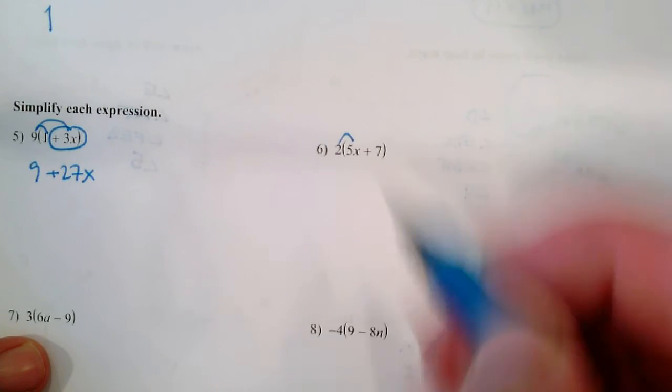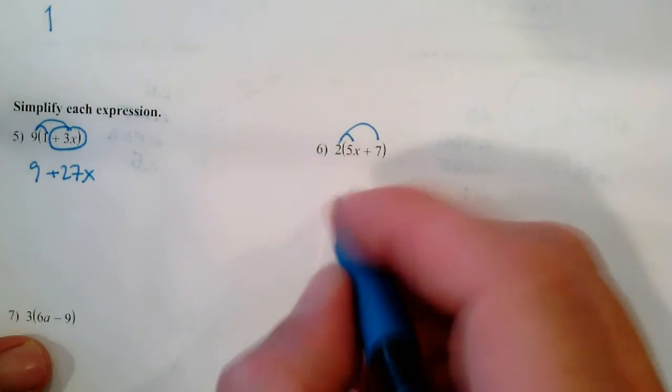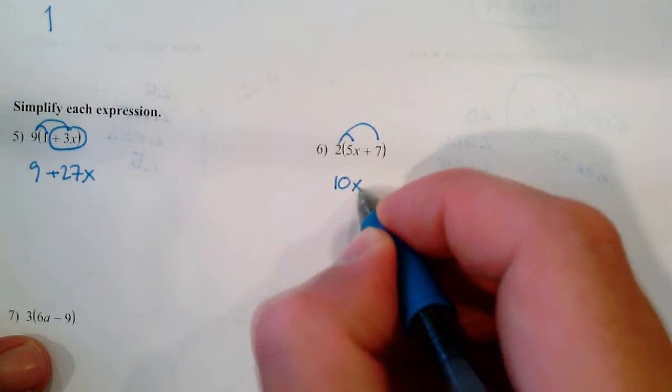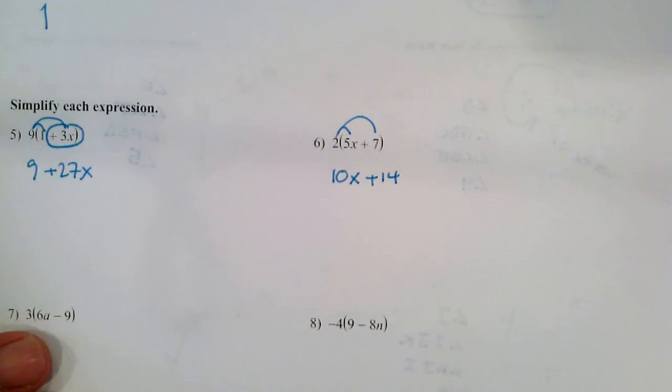Over here, 2 times 5x, 2 times positive 7. 2 times 5x is 10x. That means 10 times x. 2 times 7 is 14.